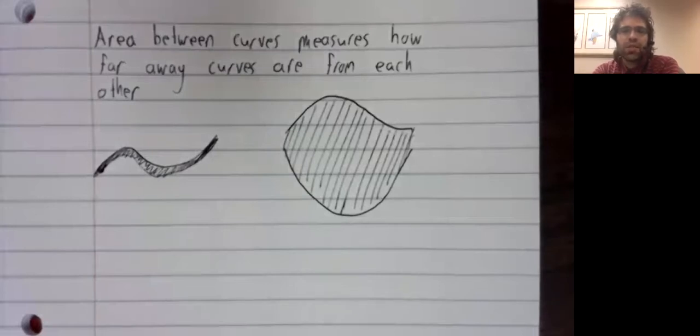So, area between curves isn't something that just shows up in toy problems involving how much paint do you need to paint such and such a figure. Area between curves shows up any time you have two curves and you want to know how similar or how different they are. It's a powerful tool for that reason. What do you think?